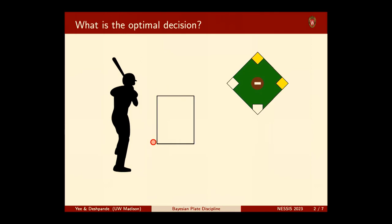Now suppose the batter faces the same pitch, but now we know there are runners on first and second. Does our decision change at all? There are maybe some avenues where you could argue the batter should swing — there are runners in scoring position, and if we get a hit, it's pretty likely we'll score at least one run. But the argument from before is maybe still a little stronger. So in this situation, the batter should still probably take.